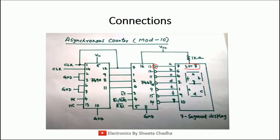Do not forget to connect PIN number 3 or 8 with VCC through a 1 kilo ohm resistance. The maximum resistance you can use is 1 kilo ohm so that the voltage drops across it. Hence the 7 segment display will receive less than VCC voltage so that it will not short circuit. So this is all about your connections.